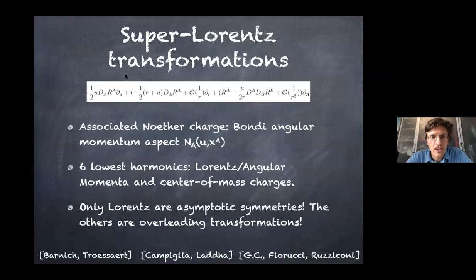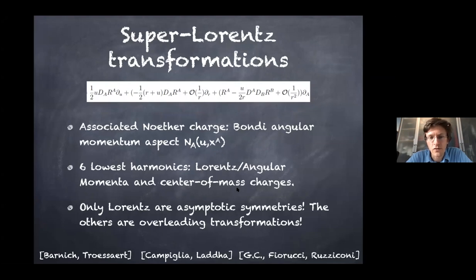Super-Lorentz transformations involve two arbitrary functions on the sphere times the vector tangent to the sphere at infinity, with some sub-leading corrections depending on the gauge. There are charges at the Bondi angular momentum aspect. The six special transformations — the lowest harmonics, l equals one — are the Lorentz charges associated to angular momentum and center of mass. The others are over-leading transformations that change the boundary metric, studied by Barnich and Troessaert around ten years ago.